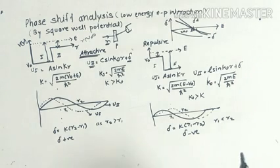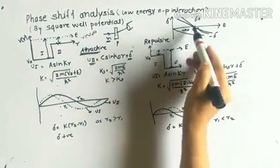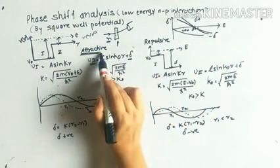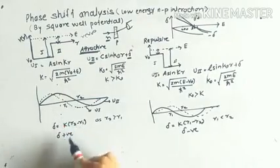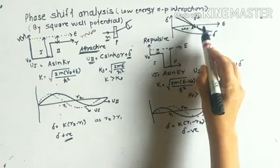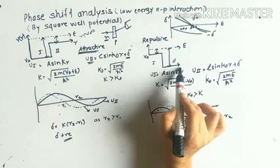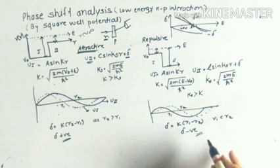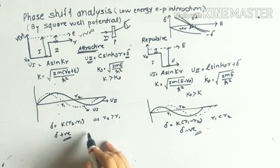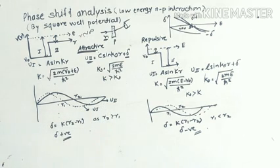This is how the phase shift delta is explained using the square well potential. Below 300 MeV, neutrons are scattered by the attractive potential, and delta is positive. Above 300 MeV, the neutron is scattered by the repulsive potential, and delta is negative. For a repulsive potential, delta is negative; for an attractive potential, delta is positive. This is how the phase shift delta is explained with the help of the square well potential.